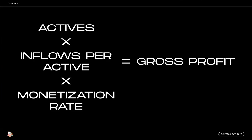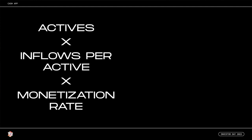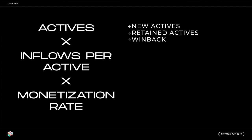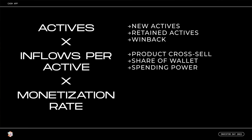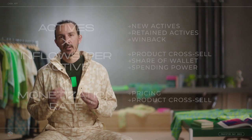Gross profit is equal to the number of active accounts times the volume of dollar inflows per active times the gross profit monetization rate applied to the inflows. We can break down these top-level drivers further into sub-drivers. Actives is a function of new actives joining Cash App, retained actives, and actives we win back after they've gone inactive. The volume of inflows brought into the ecosystem by each active is driven by the number of products they adopt, our share of wallet relative to other products in the category, and the overall spending power of the active, which can be affected by things like government stimulus or tax refunds.